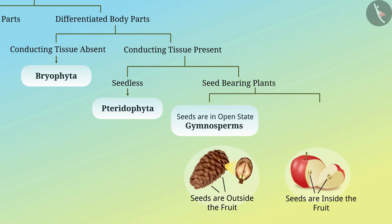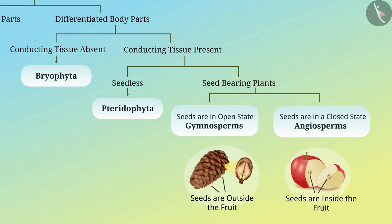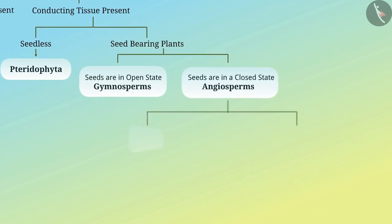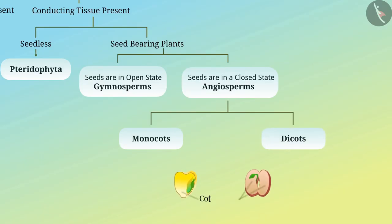Those plants whose seeds grow inside the fruit — that is, the seeds are in a closed state — are called angiosperms. Angiosperms can be further classified into monocots and dicots based on the number of cotyledons.